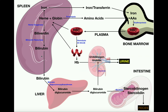When bilirubin is transferred to the liver, there's going to be an enzyme called bilirubin diglucuronyl transferase that's going to attach some glucuronide residues to the bilirubin, forming something called bilirubin diglucuronide. This solubilizes the bilirubin even more than it was before.